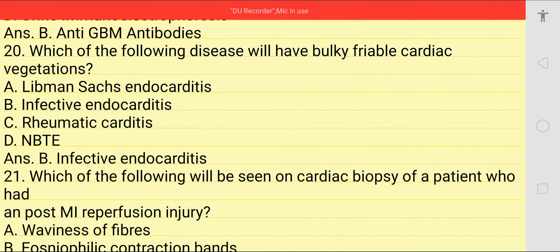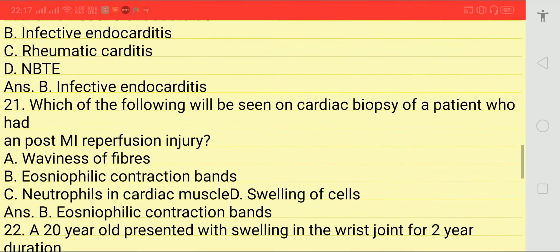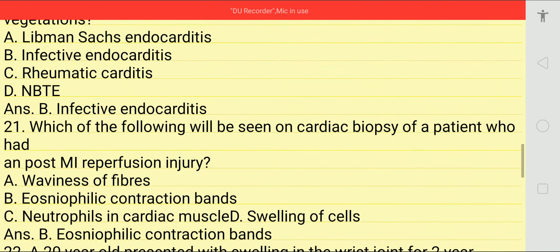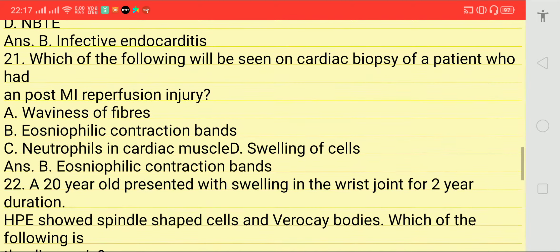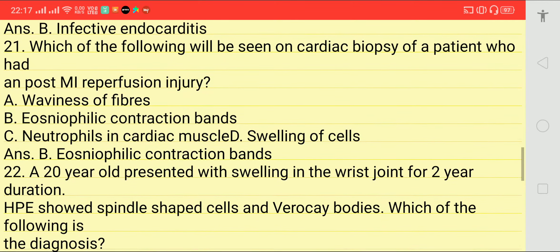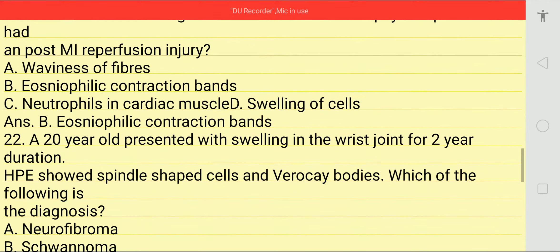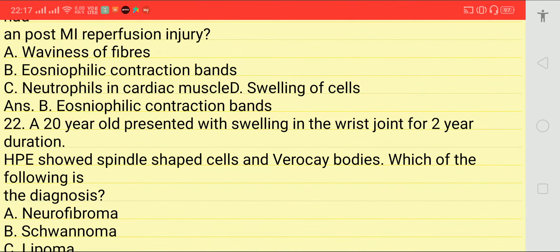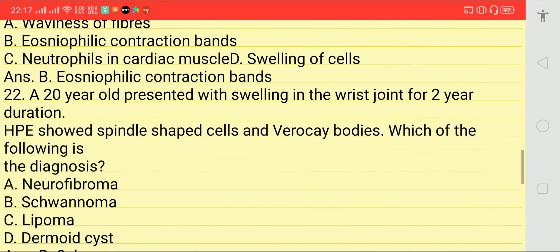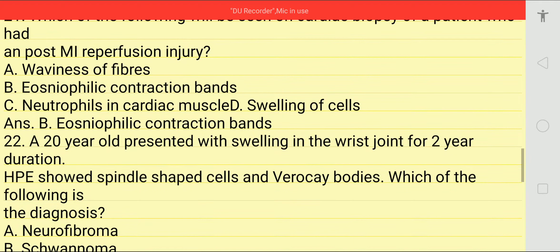Which of the following disease will have bulky verrucous cardiac vegetations? Answer is infective endocarditis. Which of the following can be seen on cardiac biopsy in an obese patient who had post-MI reperfusion injury? Answer is eosinophilic contraction band necrosis.